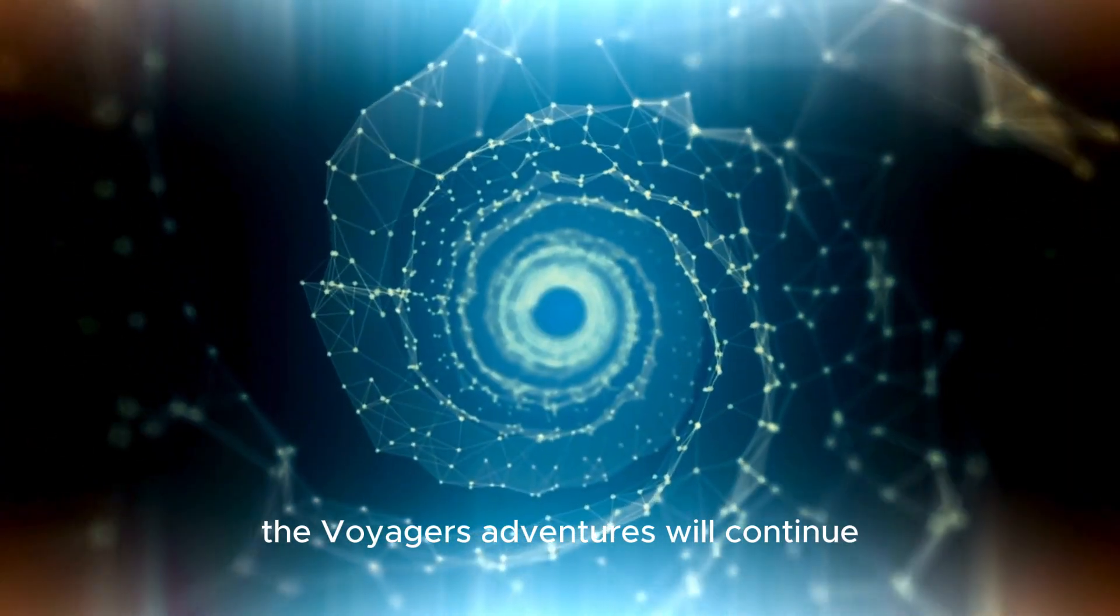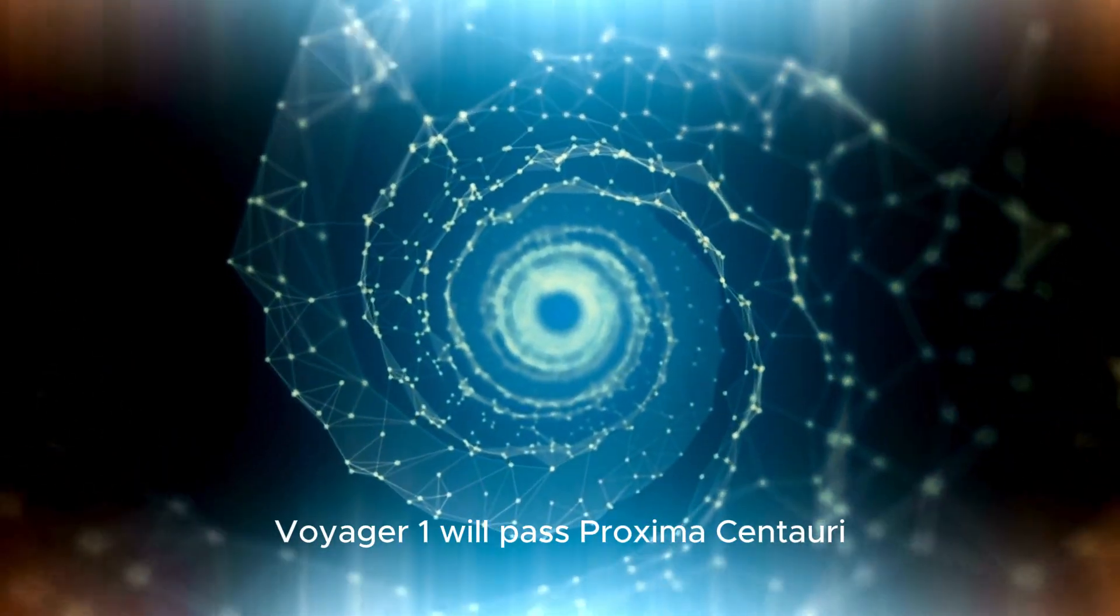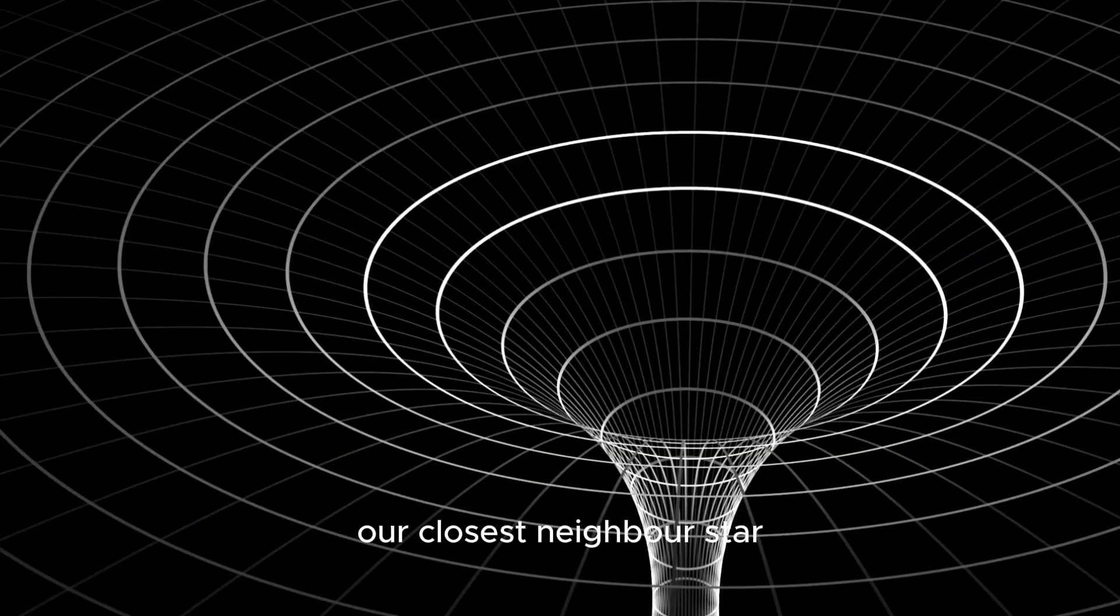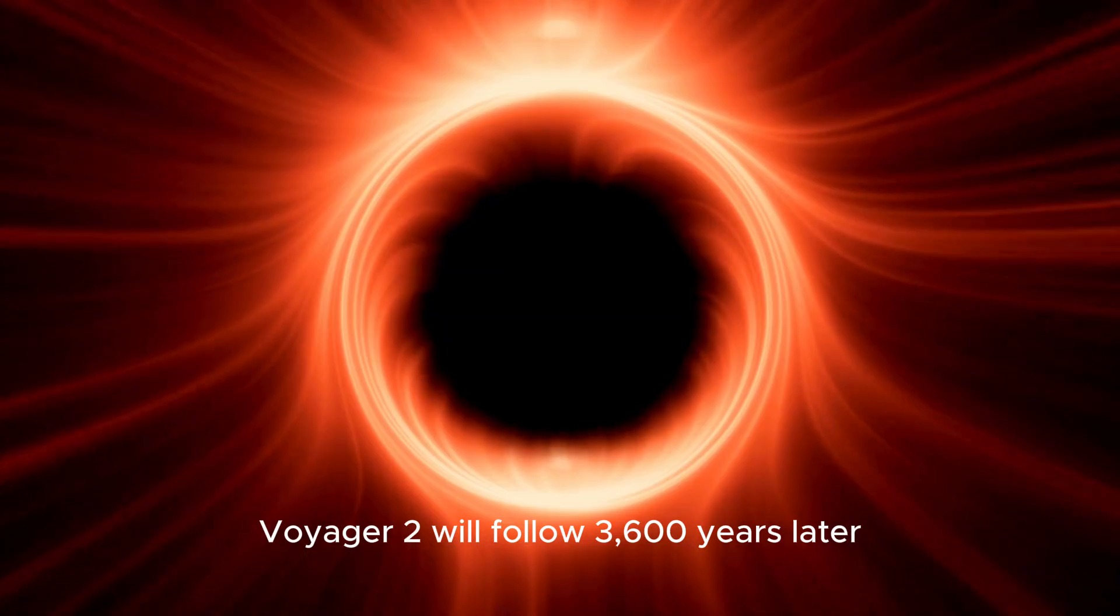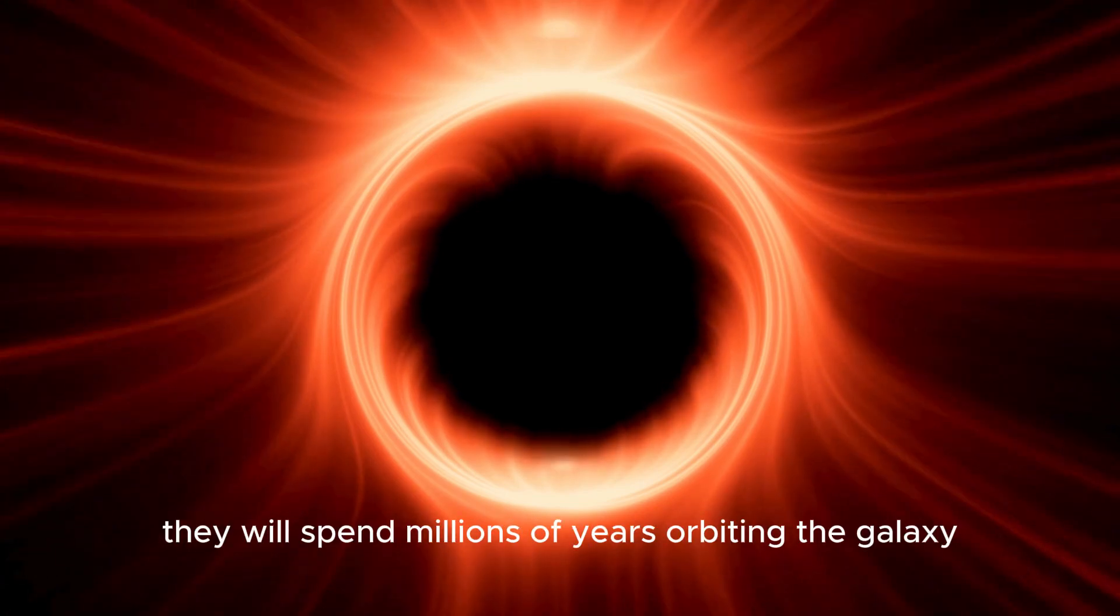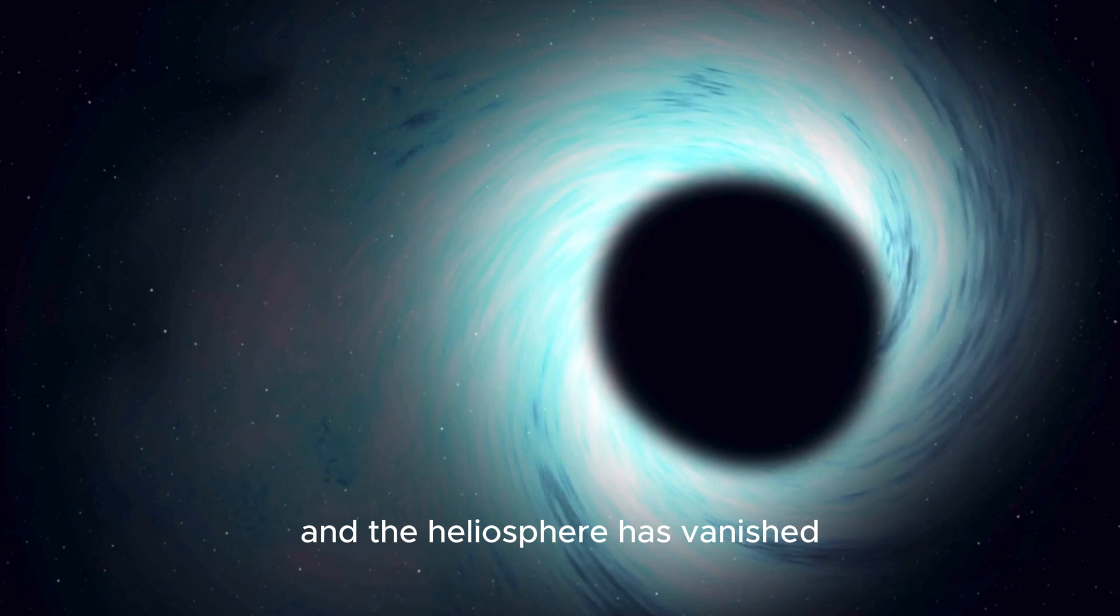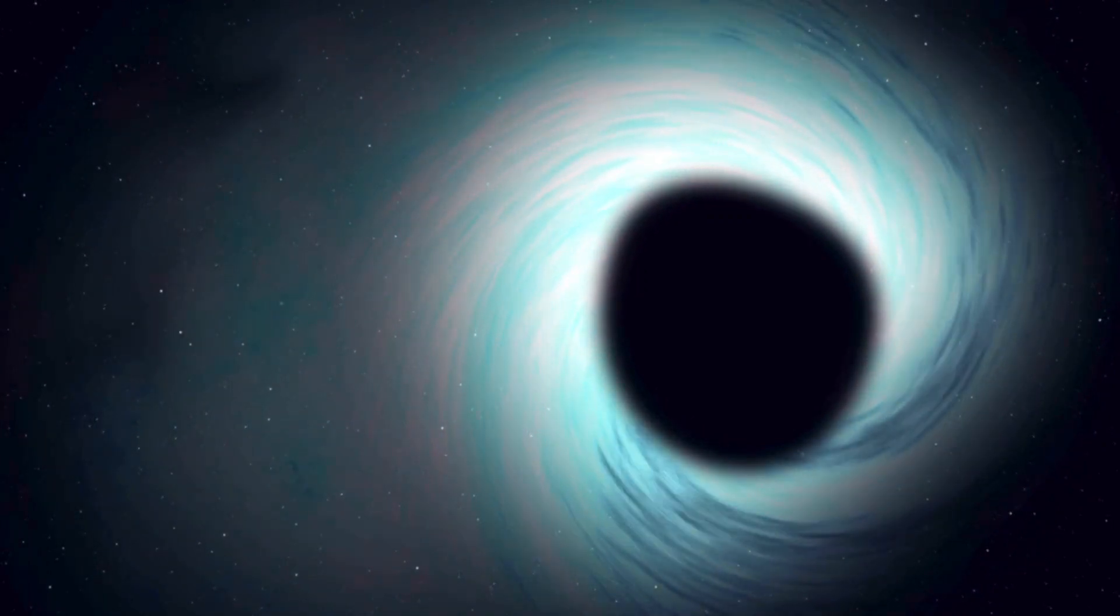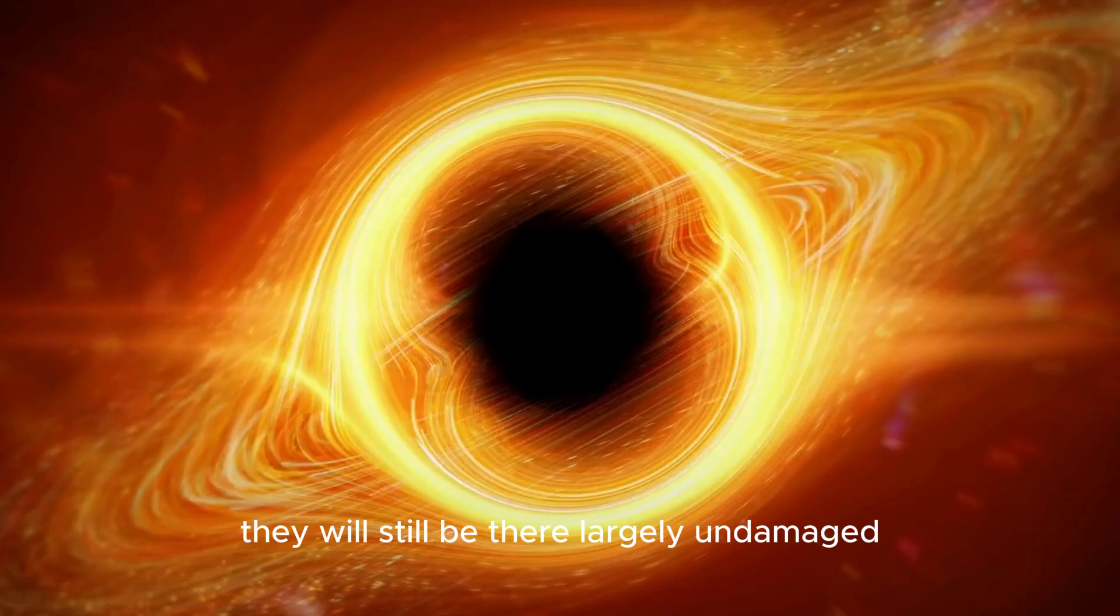The Voyager's adventures will continue even when they are entirely silenced. Voyager 1 will pass Proxima Centauri, our closest neighbor star, in 16,700 years. Voyager 2 will follow 3,600 years later. After that, they will spend millions of years orbiting the galaxy long after our Sun has disintegrated and the heliosphere has vanished. Not to mention one pale blue dot, they will still be there, largely undamaged.